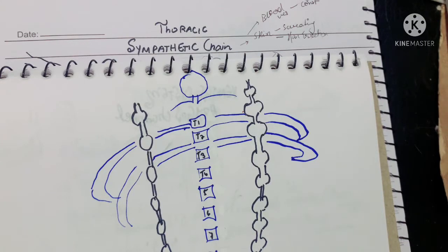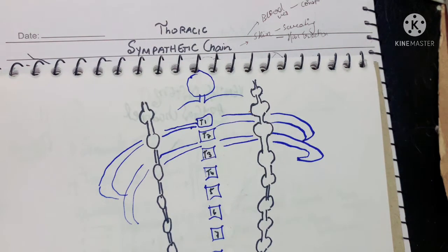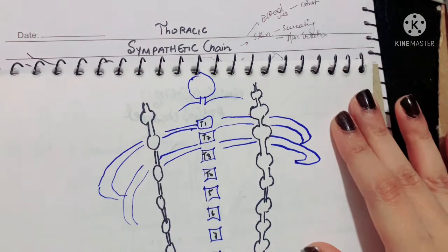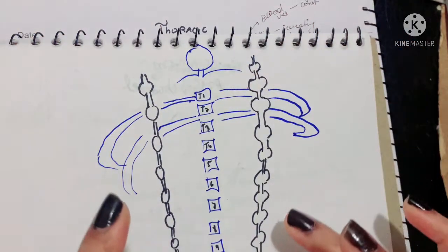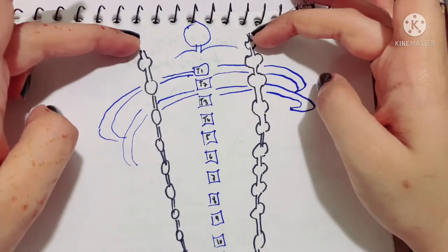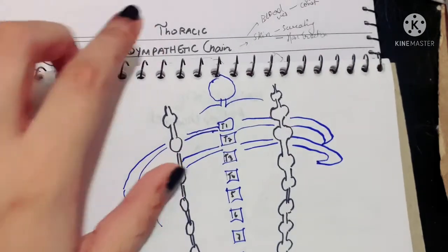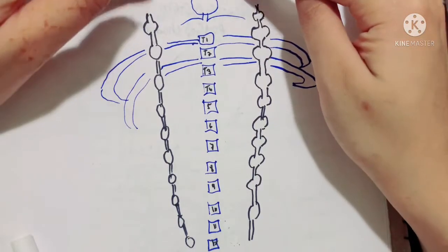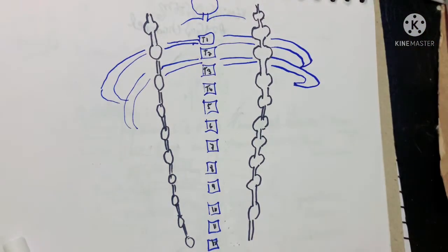Assalamu alaikum, this is Dr. Hasna and today we will be studying the sympathetic chain, mostly the thoracic part of it. The sympathetic chain lies on either side of your vertebra and extends from the cervical area all the way to the lumbar area. Today we are only going to cover the thoracic part — above it are the three cervical ganglions (superior, middle, and inferior), and beneath it are the L1 and L2 ganglions.